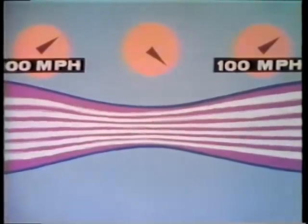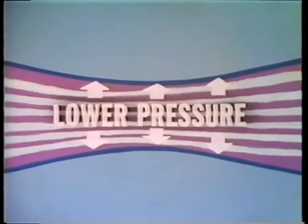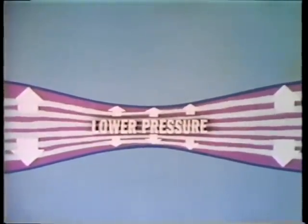But the interesting thing is that in order for the air to go at the faster speed through the narrow part, something has to balance this change in velocity — this speed difference. What changes is the air pressure in the narrow part. This pressure is significantly lower than the pressure at either end. But what does this have to do with flying? If we cut the model in half, we would have a profile similar to an aircraft wing section called an airfoil.